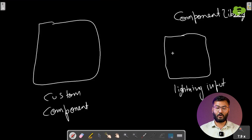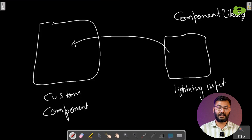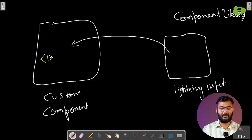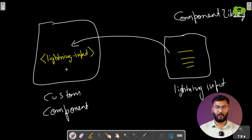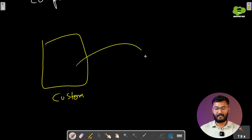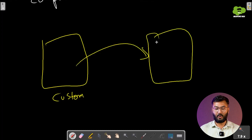Now if you want to show this standard component inside your custom component, you will use a tag with the name of that component — lightning input — and whatever code is in that component will be rendered inside your custom component. Now we will show how to put a custom component inside another custom component.